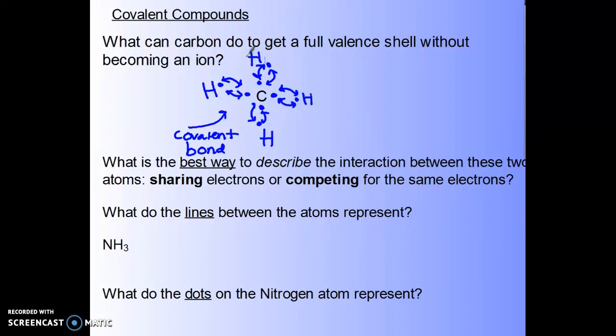There you go. That's the drawing. Not very lovely. But usually we would take this and we would draw this like this. Where the line represents the bonds, the covalent bonds between carbon and hydrogen. And each of those bonds has two electrons per bond.